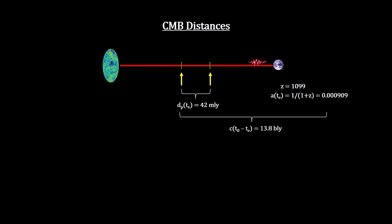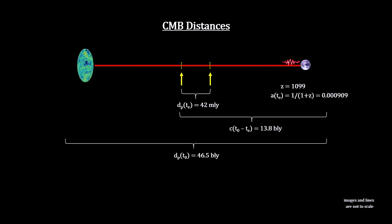It traveled for just under 13.8 billion years to reach us, and its starting location is now 46.5 billion light-years away, making the diameter of the visible universe 93 billion light-years.